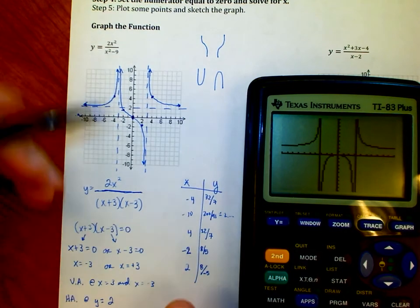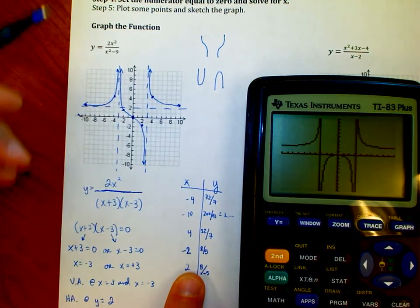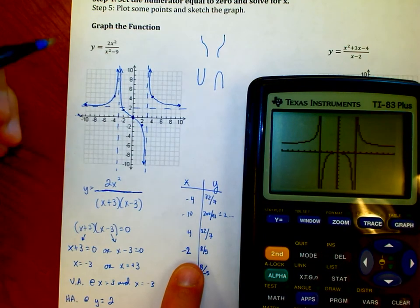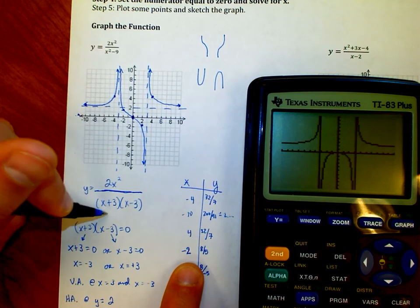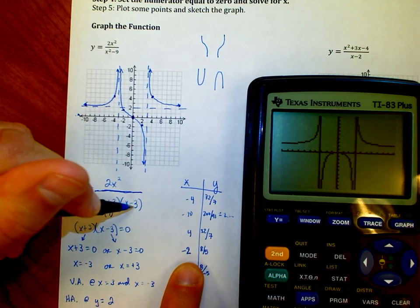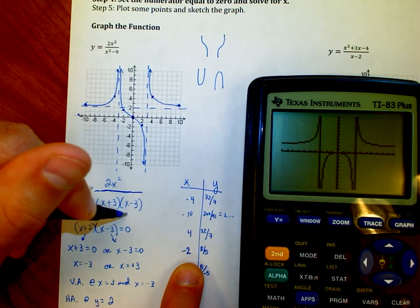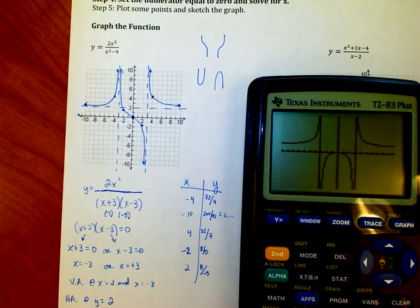Let me go back to negative 2 real quick. It looks like it goes down and down on both sides instead. So if I go to negative 2, negative 2 squared is 4 and 4 times 2 is 8. That's true. Negative 2 plus 3 is negative 1. And negative 2 minus 3 is negative 5.